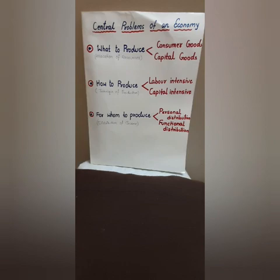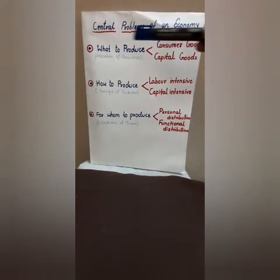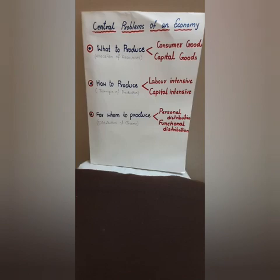In 'what to produce,' there are two types of goods: consumer goods and capital goods. As you can see in the diagram, these two are concerned with the allocation of resources. A producer has to decide how much quantity of consumer goods as well as capital goods has to be produced. So 'what to produce' is concerned with the allocation of resources for producing either consumer goods or capital goods, and this is the first central problem of our economy.